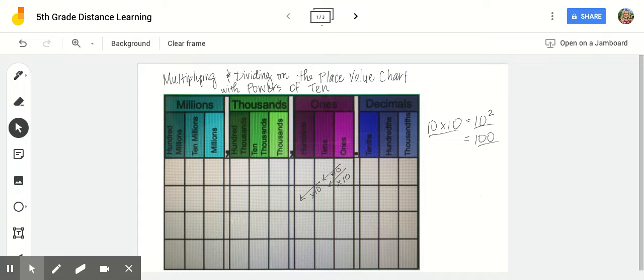All right, so we're going to check out multiplying and dividing on the place value chart using these powers of 10. So I'm going to keep this same number, 745. That's going to be my number today. So I'm going to place the seven in the hundreds column because that's the value of the seven, and the four goes here and the five goes here.